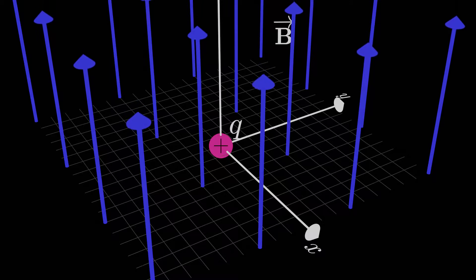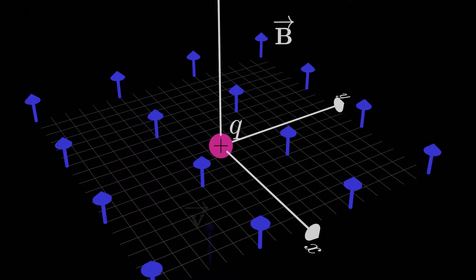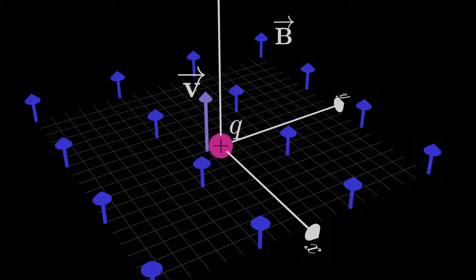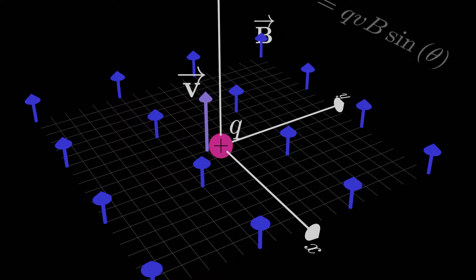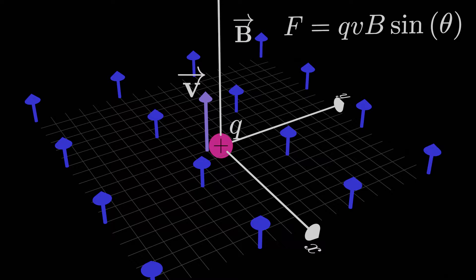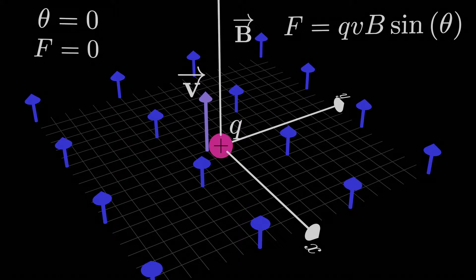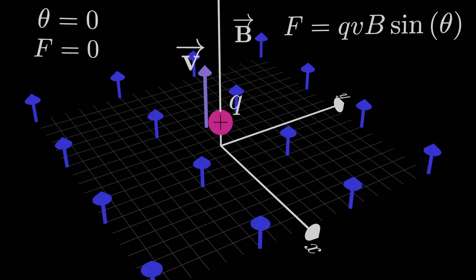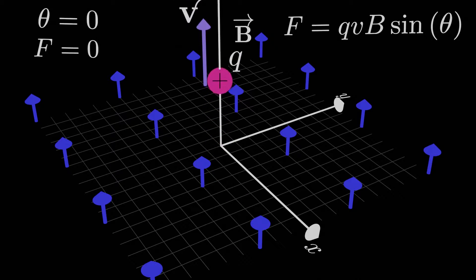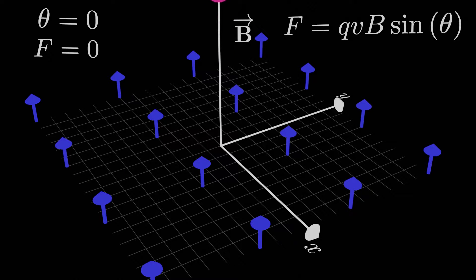So let's look at the first possibility: the charge's velocity is parallel to the magnetic field. Because the magnitude of the force is qvB sin θ, and θ — the angle between v and B — is zero since the two vectors are in the same direction, we end up with the force being zero. If the velocity is parallel or anti-parallel to the magnetic field, the force is zero, so the particle just continues in the same direction at the same velocity forever.